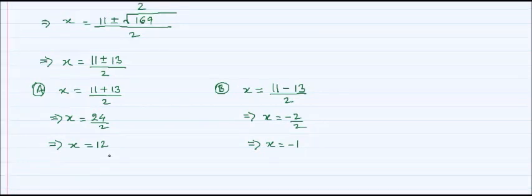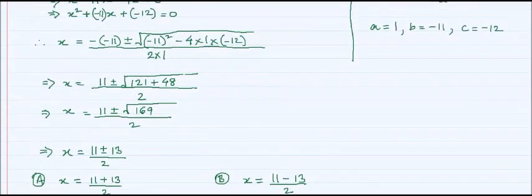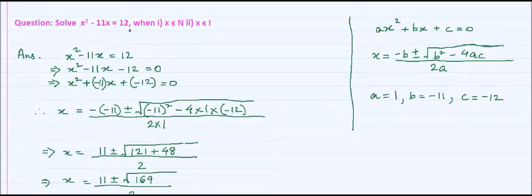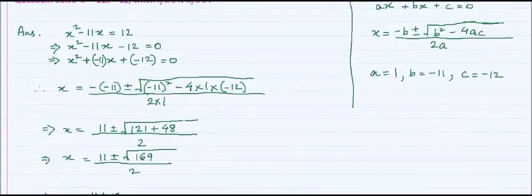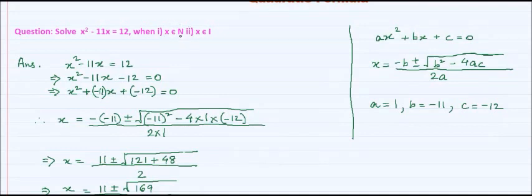Now, if we had been asked to solve this quadratic equation x squared minus 11x equal to 12, our answer would be x equal to minus 1 comma 12. But we have been given two conditions. The first is x belongs to the set of natural numbers, and the second is x belongs to the set of integers. We have to give the values of x that fall under each set.